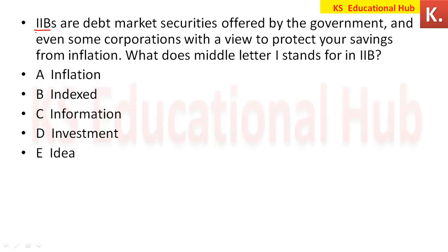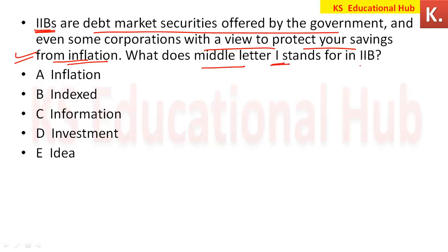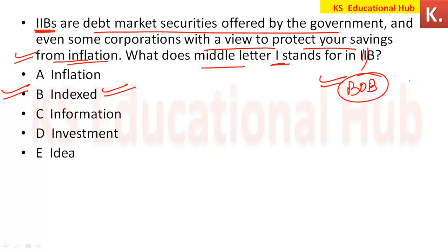IIB — the full form is Inflation Index Bond. These are debt market securities offered by the government and some corporations to protect your savings from inflation. In the abbreviation IIB, the middle letter 'I' stands for 'Index.' This type of abbreviation question appeared frequently in Bank of Baroda exams for financial terms.